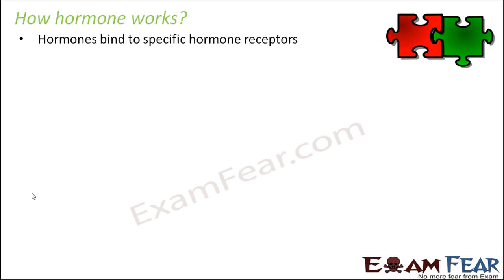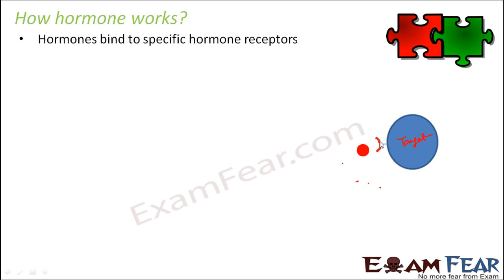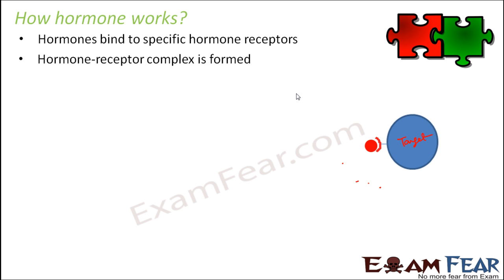This is the hormone, this is the receptor, and they will bind together. This is the target cell which has a receptor. Whenever it sees a hormone for which it is specific, it will tend to bind to that hormone. As a result, a hormone-receptor complex is formed. This structure which is formed when the hormone combines with the receptor is known as the hormone-receptor complex.